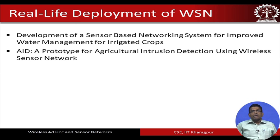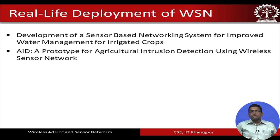The other application is for monitoring if there is any intrusion into the agricultural field using a wireless sensor network. Particularly in our country, agricultural produce is lost due to humans stealing or due to cattle entering the field and damaging the crops. So it is very important to protect these fields from intrusions, and this is what we are addressing using our SWAN node.